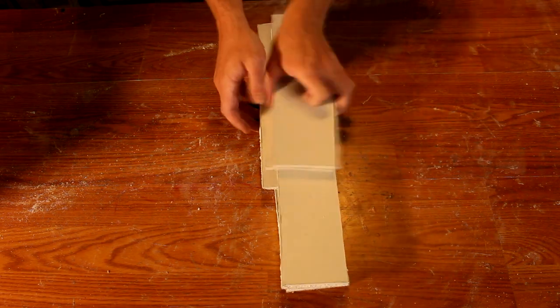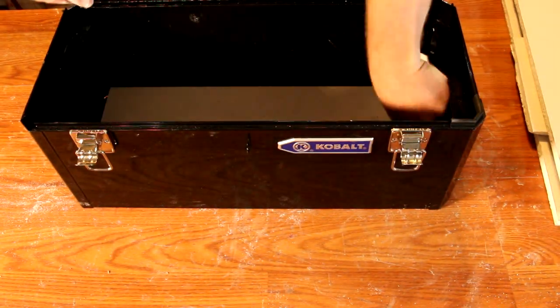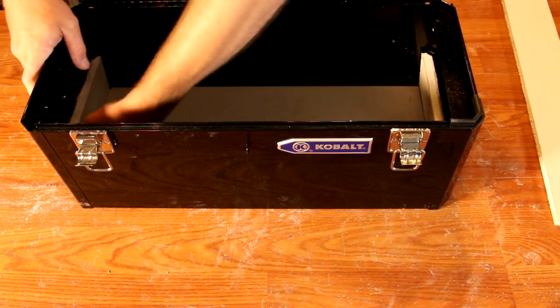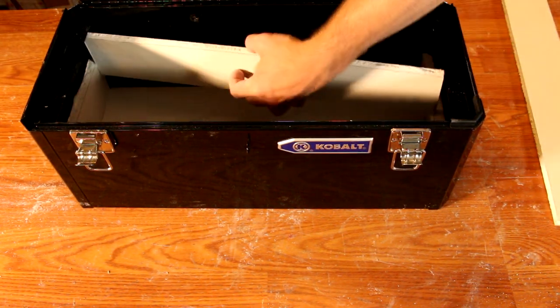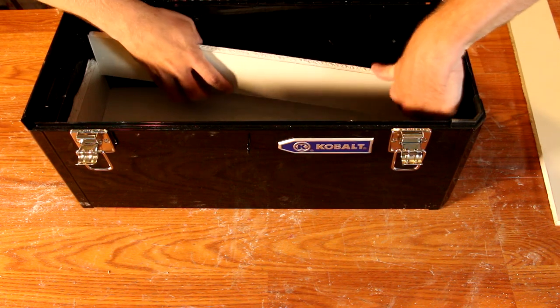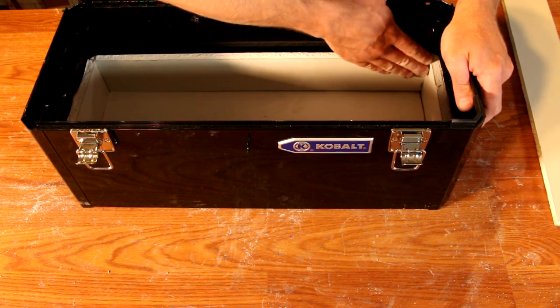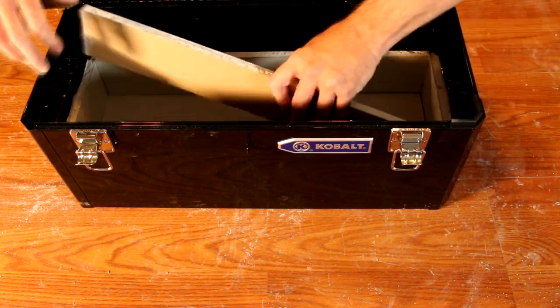Now we'll go ahead and dry fit all of our panels to the box. These don't need to be super tight. In fact, loose is just fine. The glue we use will expand to six to seven times its original size and fill any gaps, so just make sure it's in there somewhat snug and that will be good enough.